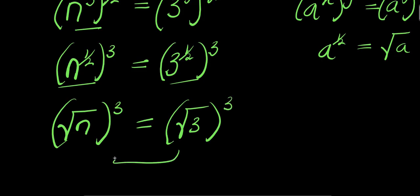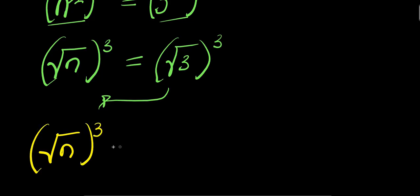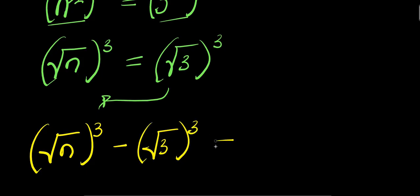Let's move this over here. So what I am going to have is square root of n raised to the power of 3, minus square root of 3 raised to the power of 3, and this equals 0.